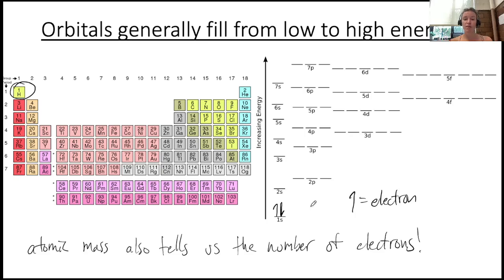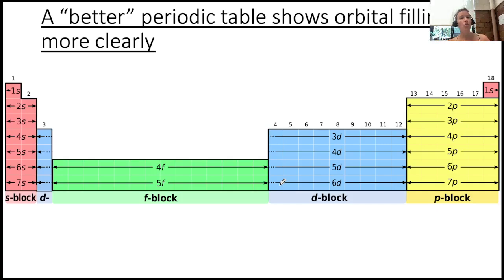Once we fill up 1s, we need to jump into 2s, right? So I like to always show this picture of the periodic table because it shows us very neatly how electrons fill the orbitals.